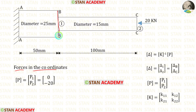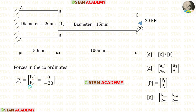At the first coordinate there is no load, so P1 equals 0. At the second coordinate we have a load of 20 kN, so P2 equals 20. Since the load of 20 kN acts toward the left side, we apply it as negative.